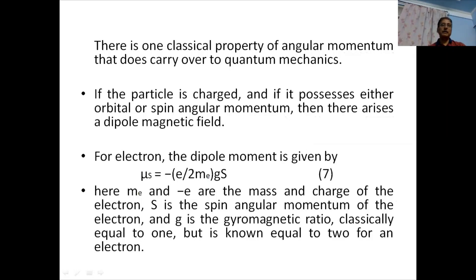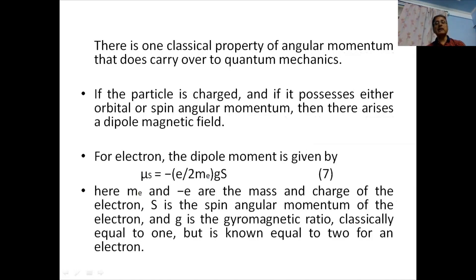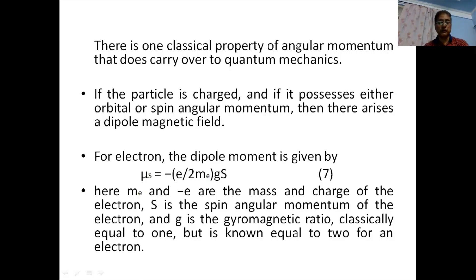There is one classical property that does carry over to quantum mechanics: if a particle is charged and possesses either orbital or spin angular momentum, there arises a dipole magnetic moment. For the electron, the dipole moment is given by μS = (e / 2mₑ) × g × S, where mₑ and e are the mass and charge of the electron, S is the spin angular momentum, and g is the gyromagnetic ratio. Classically g equals one, but it is known to be equal to two for an electron.